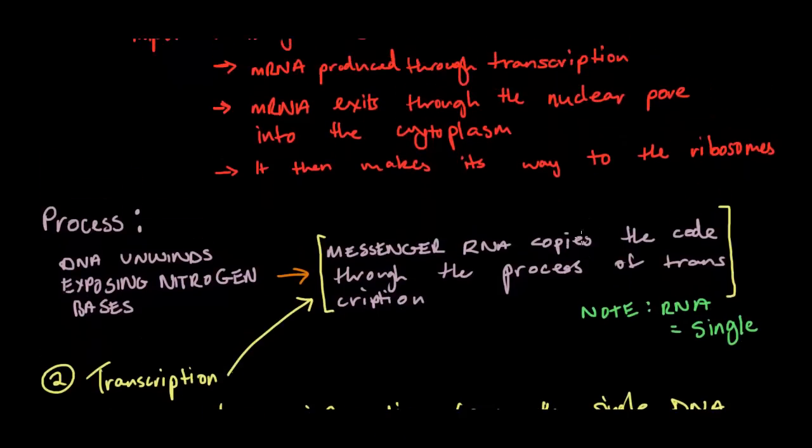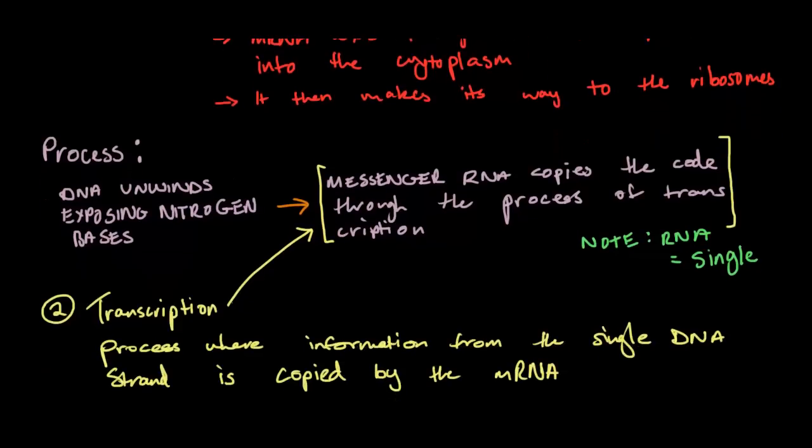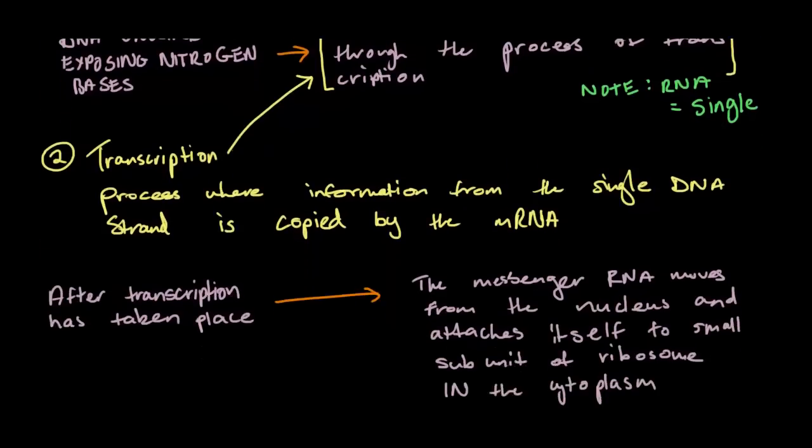So let's have a look. There's a process which means that in the DNA, as I explained before, the DNA unwinds, exposing the nitrogen bases, the messenger RNA copies the code through the process of transcription. And remember, RNA means single, so if you think about the meme forever alone, just think about RNA as being forever alone. But it's not actually forever alone, it finds its couple later, and that's all good.